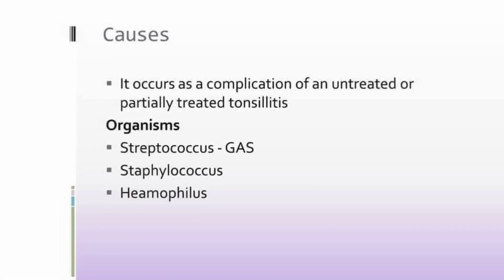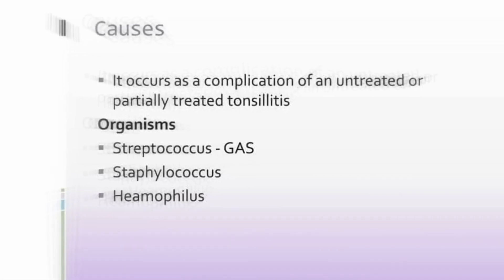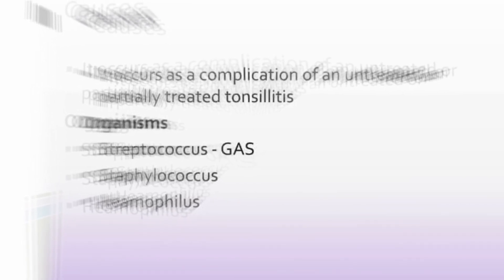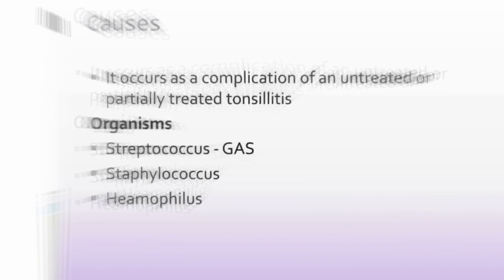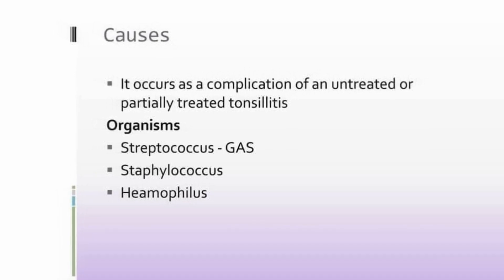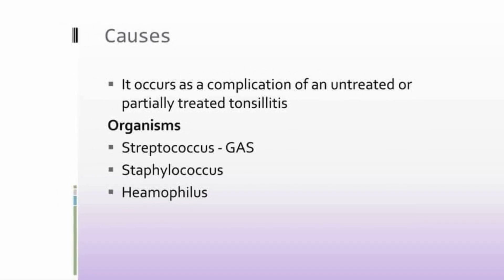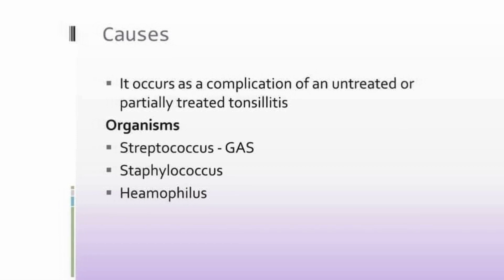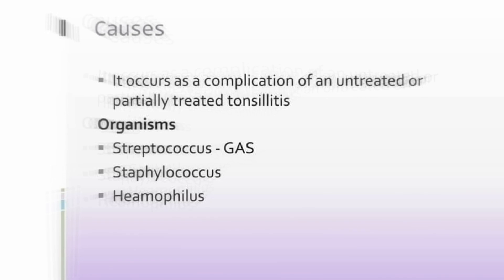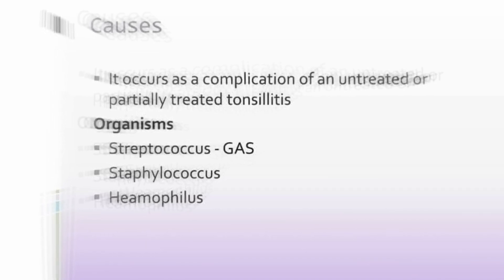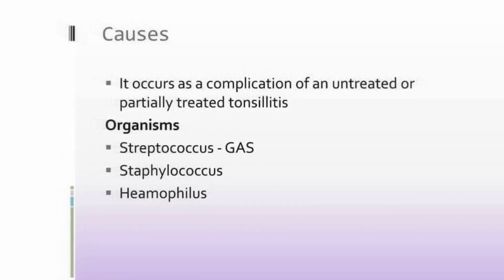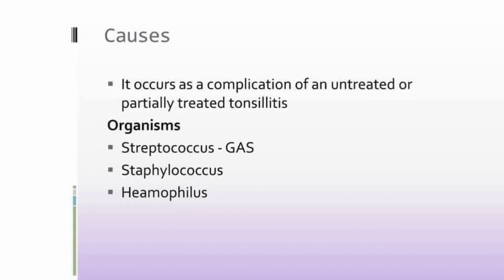The cause of peritonsillar abscess is untreated or partially treated tonsillitis. Any patient with repeated or chronic tonsillitis can develop peritonsillar abscess if untreated. The causative organisms can be anaerobic or aerobic, but aerobic microbes like Streptococcus and Staphylococcus aureus are most common, particularly group A beta-hemolytic streptococci.